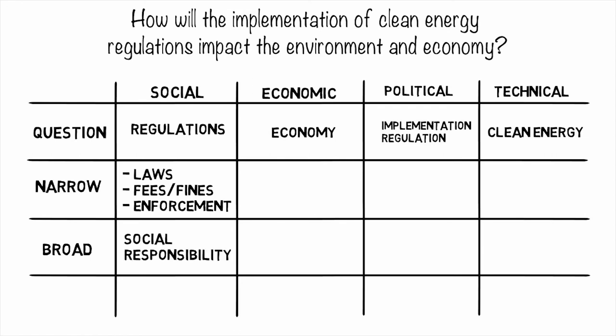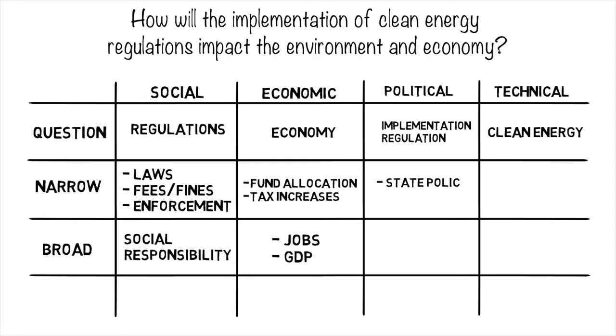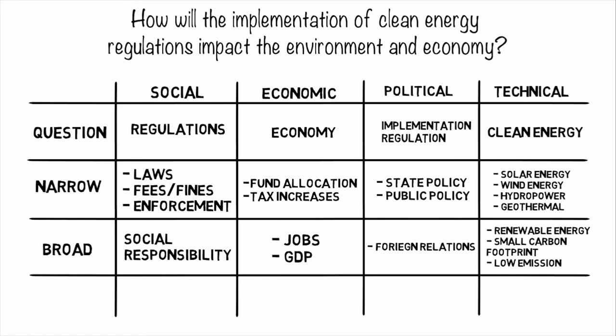You can use a thesaurus or ask your professor or TA if you get stuck on a section. The way this chart is set up enables you to create searches using a mix and match method. Just combine keywords from different sections and form your searches. If you search something and it's too specific with too few results, switch one of your search terms with a word from the broad row, and vice versa.